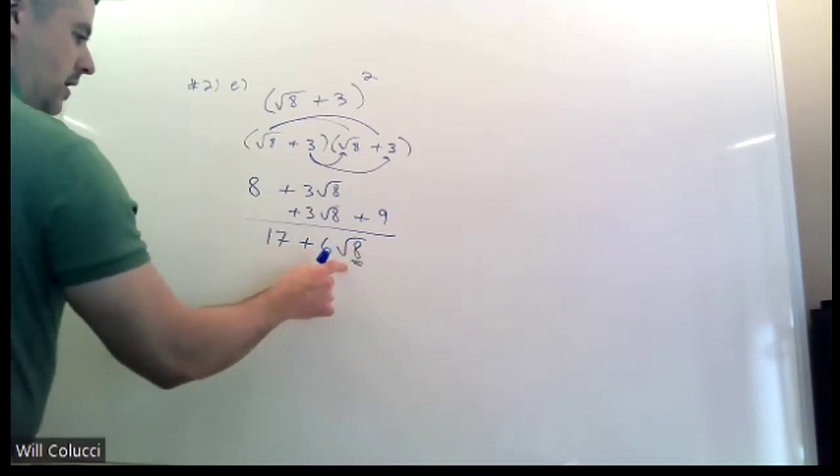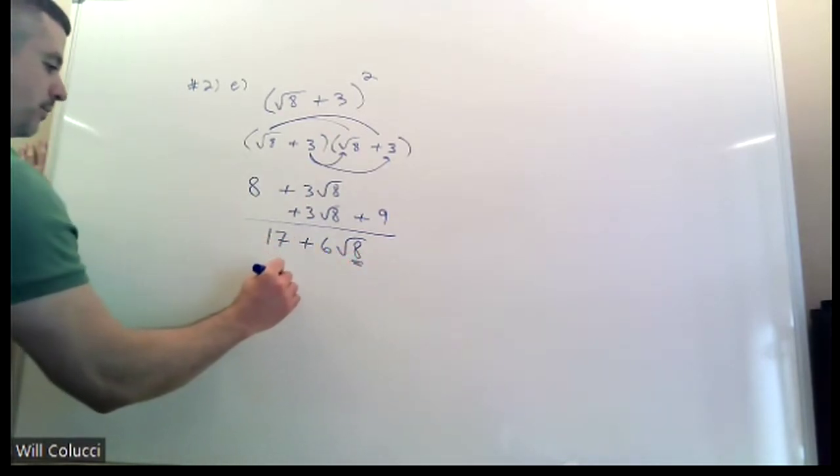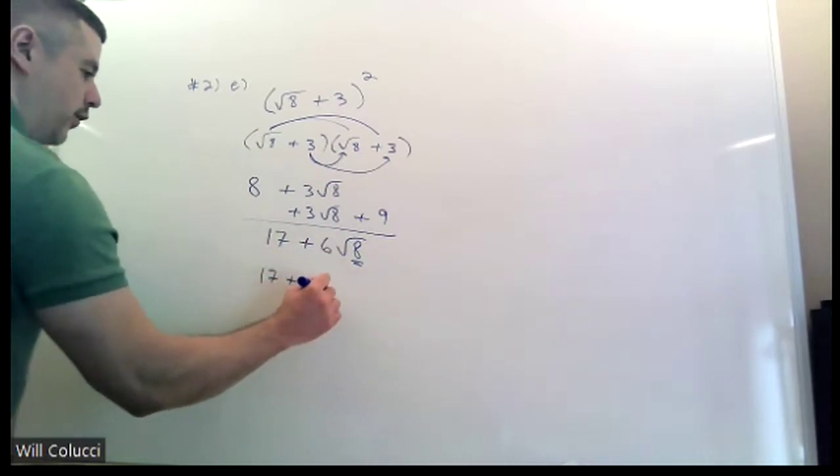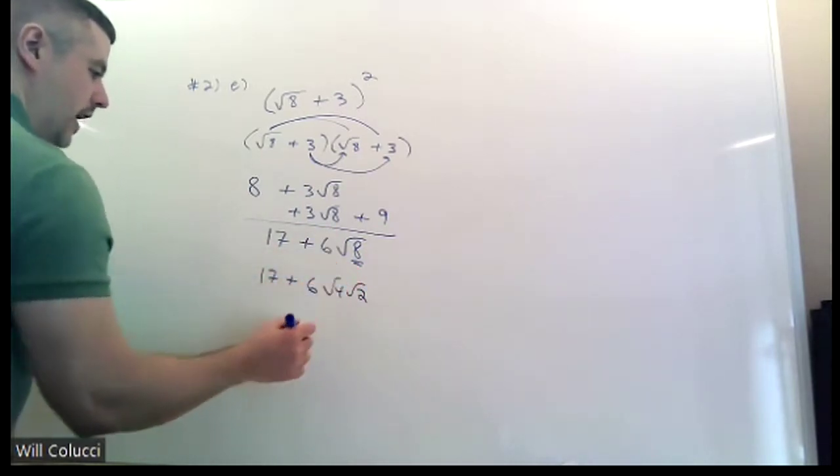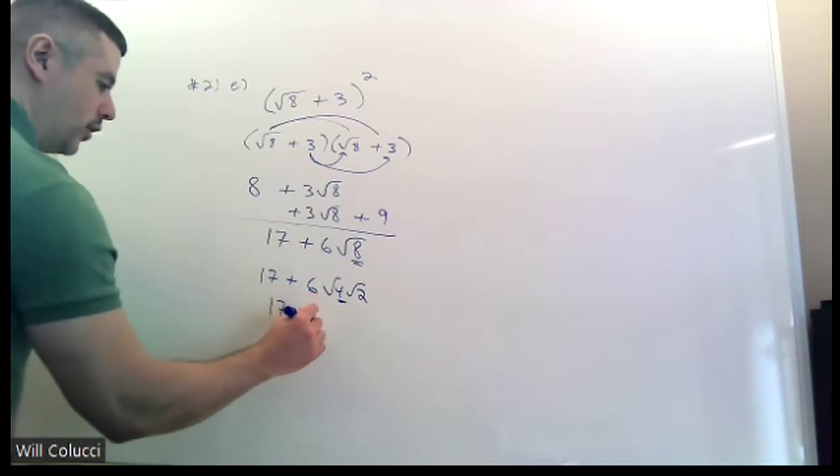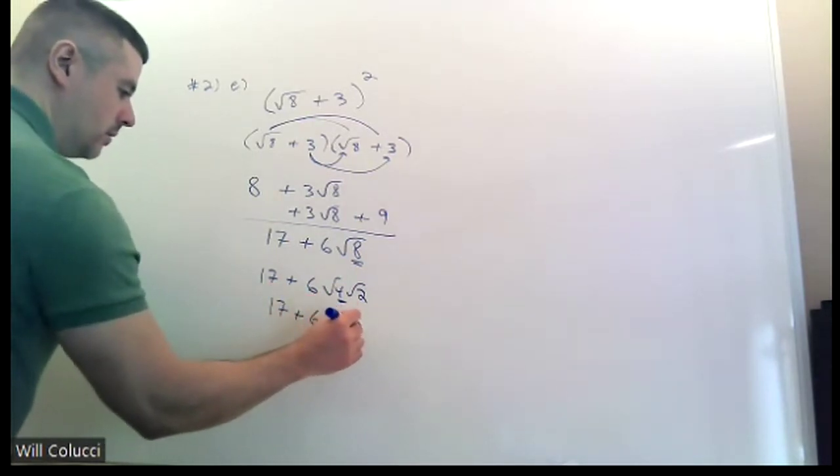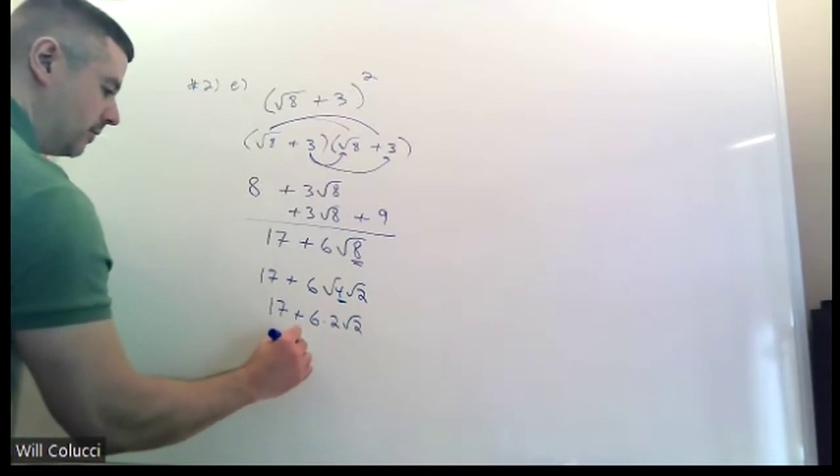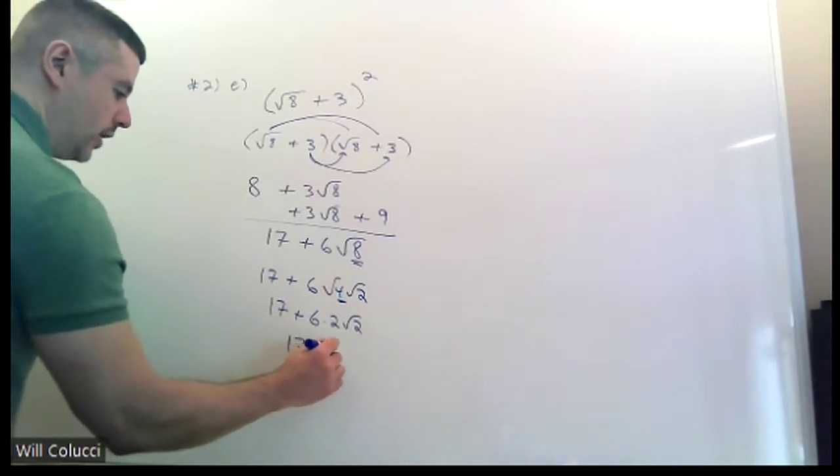But what you can do is break the radical 8 down. 8 breaks down with 4 and 2. Radical 4, radical 2. Take this out of jail. Radical 4 comes out as 2. Hook it up with the 6. 6 times 2 is 12.